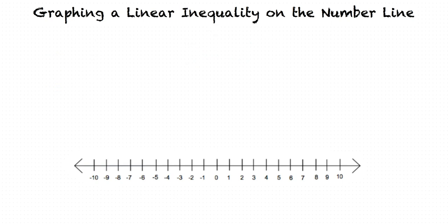Let's graph the inequality b is greater than or equal to 2. What should we do first? First, we should plot the point b equals 2. We should use a filled in circle, since b can equal 2 and still make the inequality true.